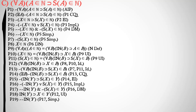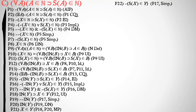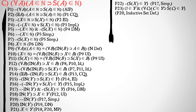Now we'll simplify premise 17 and pull out: it's not the case that Y is inductive. Double negation gives us Y is inductive. Then we'll use modus ponens on premises 18 and 20 to get X is a member of Y. Next we simplify premise 17 again to get the other half of the conjunction: it's not the case that the successor of X is a member of Y. We then pull out the definition of an inductive set along with premise 20. Premise 20 tells us Y is inductive, and the definition of an inductive set tells us that if Y is inductive, then the null set is a member of Y, and for all C, if C is a member of Y, then the successor of C is a member of Y.